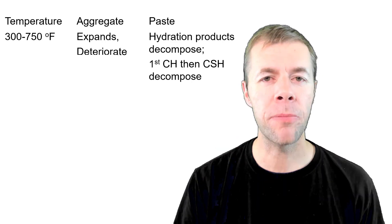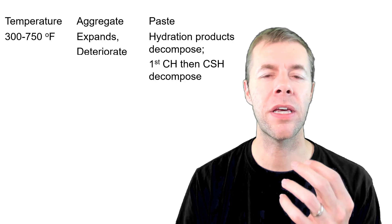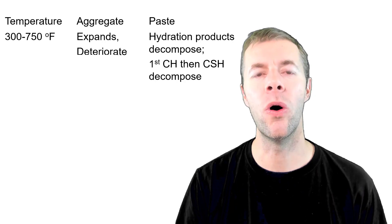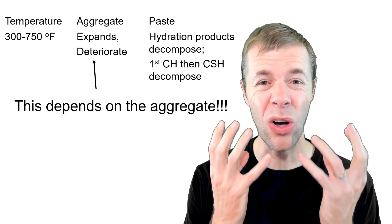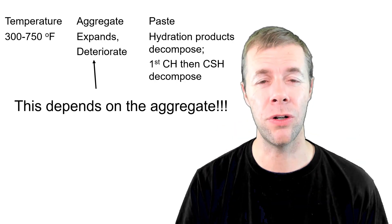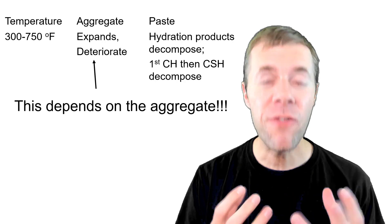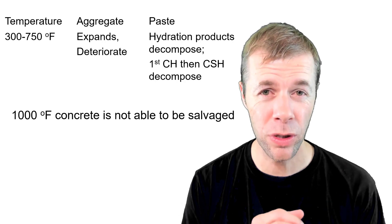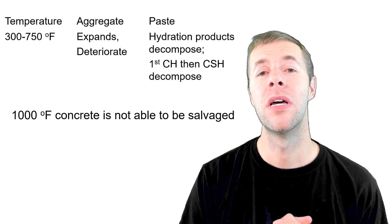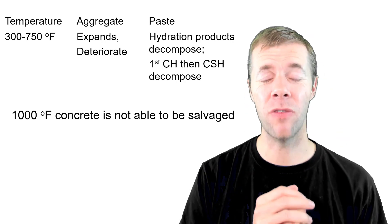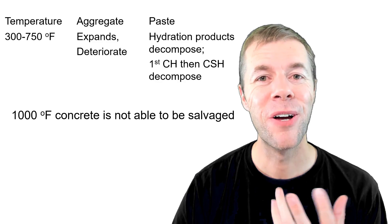But if we keep increasing the temperature as we go up above 300 degrees Fahrenheit when you get to around 750 or so or about 800 then all of a sudden the aggregates start to deteriorate. They start to basically fall apart and your hydration products, the calcium hydroxide and the calcium silicate hydrate, they also start to decompose. But this deterioration is all about the type of aggregate you're using. Not all of them are the same. If your concrete happens to get to about a thousand degrees Fahrenheit it's pretty much ruined. It pretty much can't be salvaged and I'll explain why with some data coming up.